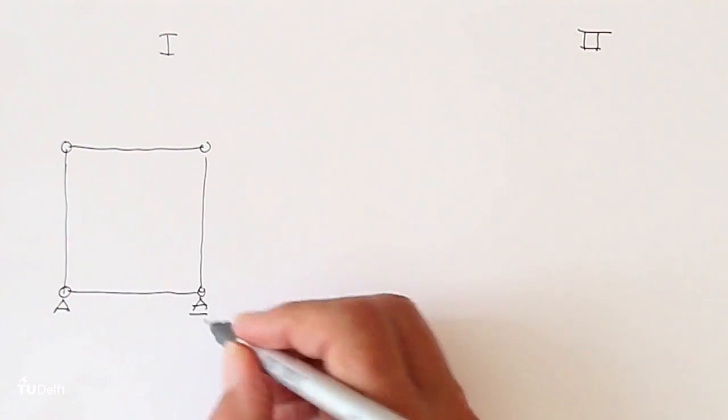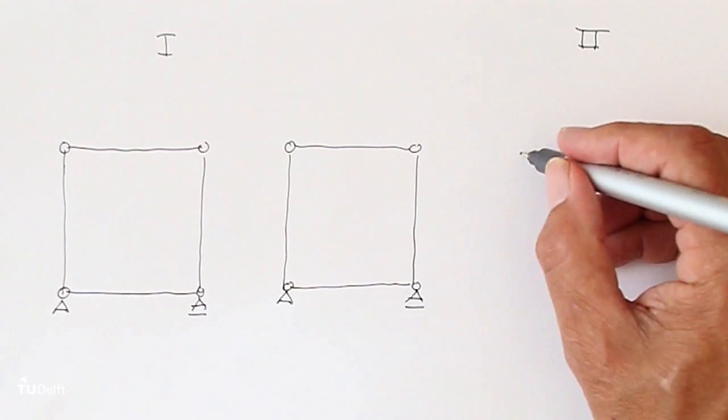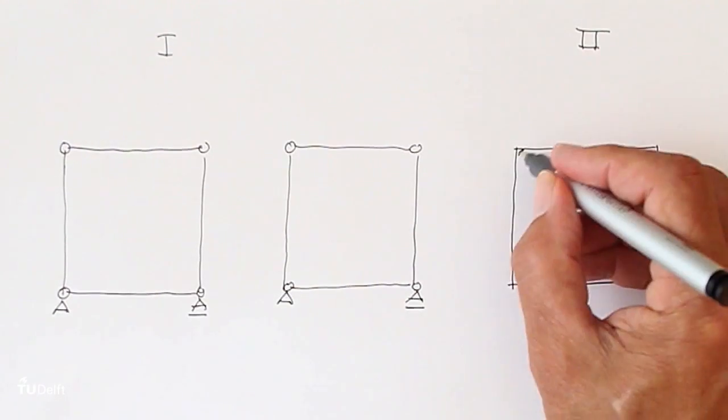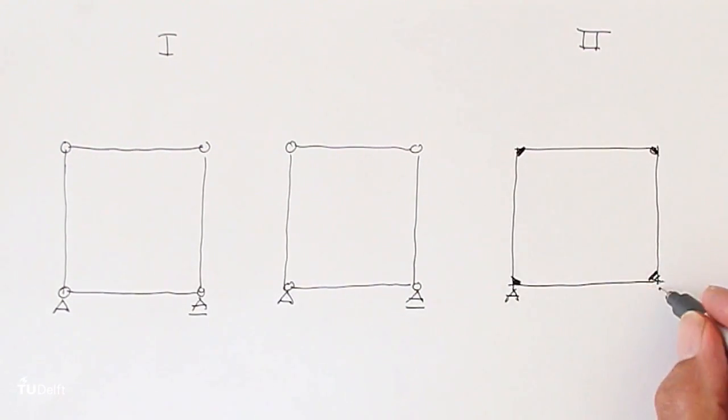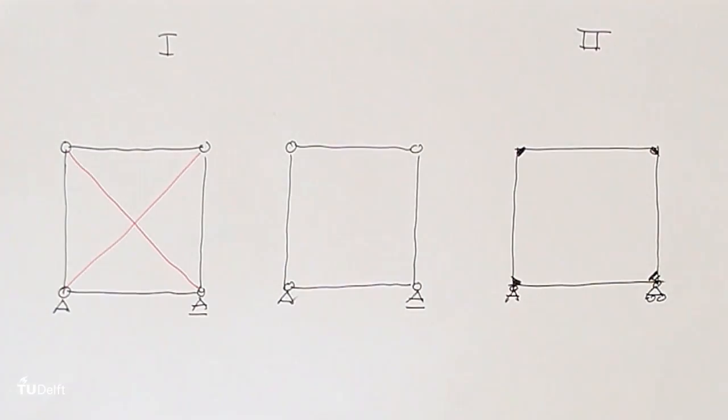To conclude, there are two basic methods to give a frame a fixed form. The first is by bracing the frame; the second depends on the rigidness of the connections. The first method can be divided into either bracing with two tension rods or with one compression rod.